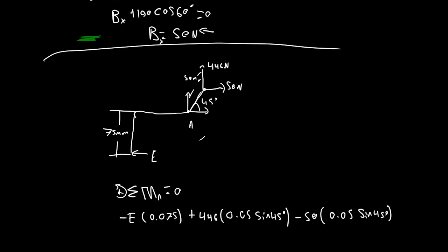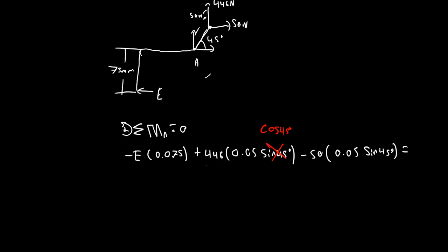This should be cos because we're doing the horizontal distance is perpendicular. So, cos 45 degrees. That doesn't actually make any difference in our calculations because sine 45 equals cos 45. But, it's good form to write it down. So, we do this. We get E equals 187.